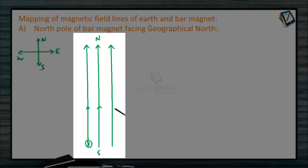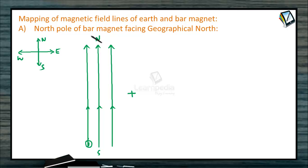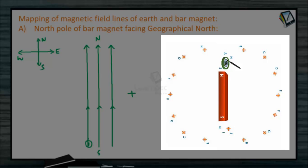The lines will be from geographical south to geographical north. To draw the magnetic field lines of the bar magnet, we fix the compass needle at the north pole and south pole. The south pole of the compass needle points towards geographical north. We put a dot, then move the compass needle forward and mark points B, C, D, E, F, G, H, and so on.